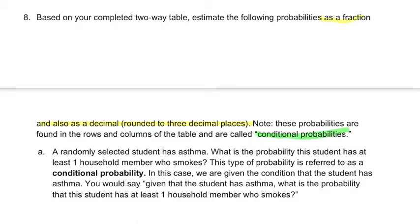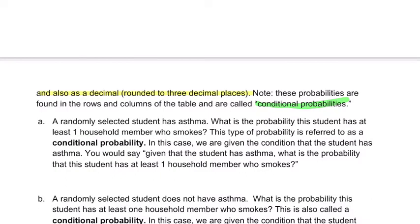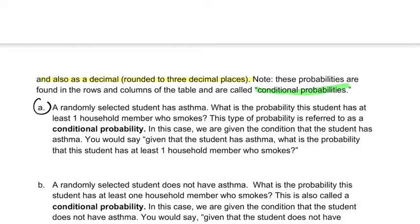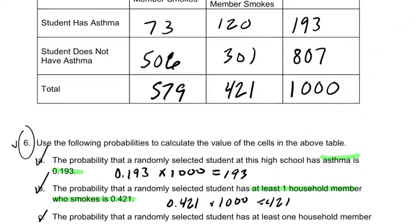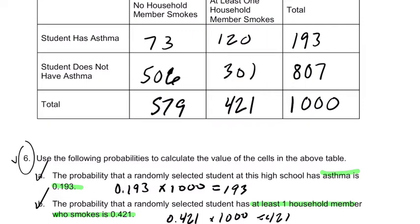So in part A, it says, let's do A first. A randomly selected student has asthma. Now, that's our condition. This is the condition. I'll highlight that in green. They have asthma. When you have a table and you're given a condition, that's going to restrict you to a row.